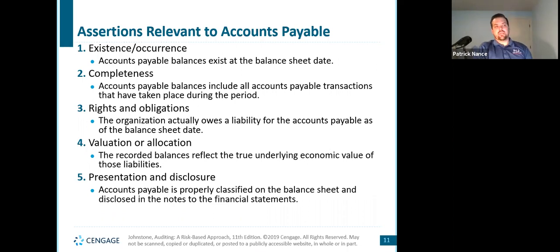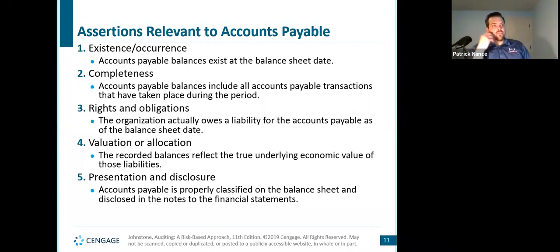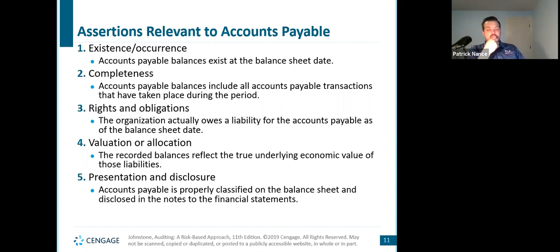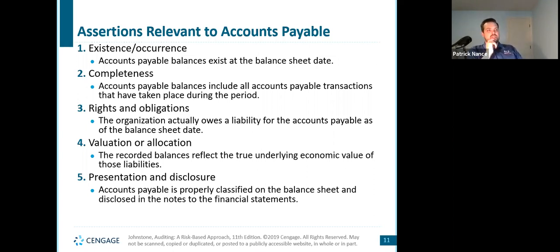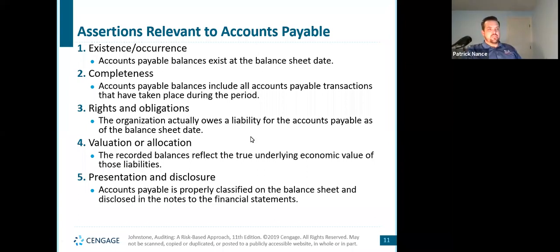When going through these assertions, we need to take into account: if there is a bias or a direction that fraud could be committed, or if there's motivation for fraud, what direction would we anticipate management committing fraud or even errors? Rights and obligations: the organization actually owes a liability to accounts payable as of the balance sheet date. Valuation allocation: the balances reflect the true underlying economic value of the liabilities. Presentation disclosure: accounts payable is properly classified in the balance sheet and disclosed in the notes of the financial statements.